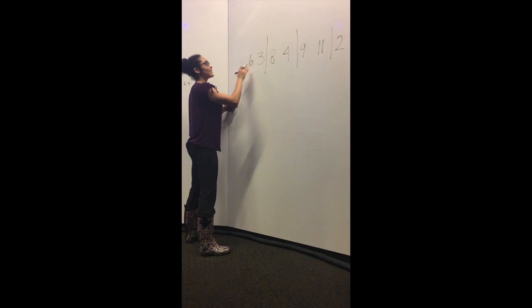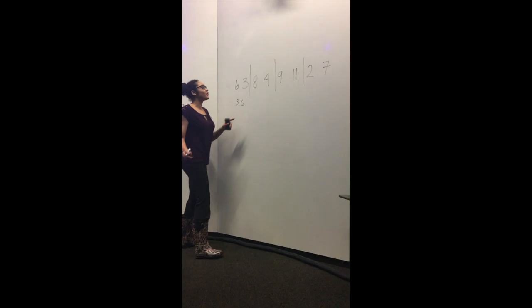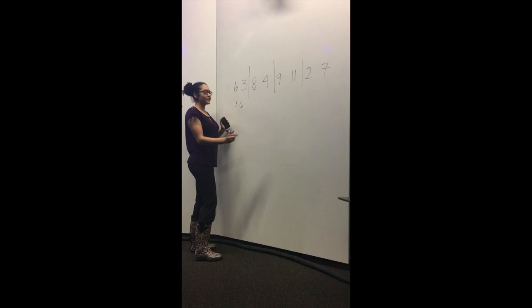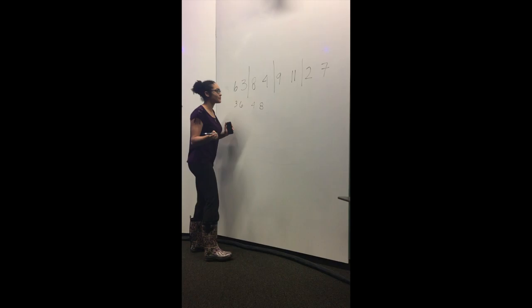So for this part, three is less than six, so they will swap. So it ends up being three, six. So we move on to the next pairing. Four is less than eight, so they will also swap. So it ends up being four, eight. We're moving to the next group. Nine is less than eleven, so it stays in this order.